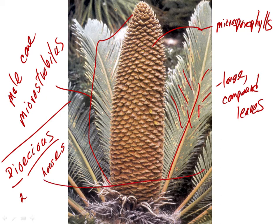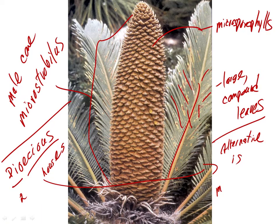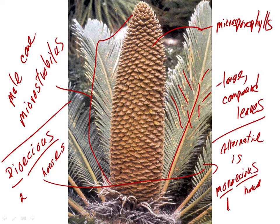The alternative to dioecious is monoecious — 'mono' meaning one house. So Selaginella is monoecious: it has a single strobilus on a single plant with both kinds of sporophylls. It's going to get a little more complex than monoecious and dioecious when we get into the angiosperms.